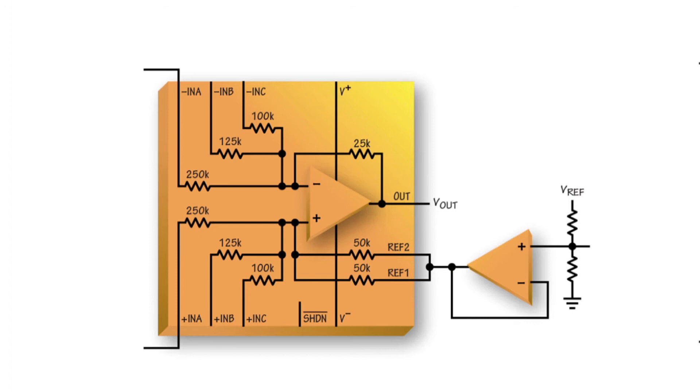To maintain good CMRR of the circuit, that connection needs to be very low impedance, which can sometimes require an additional op-amp buffer or a dedicated voltage reference.